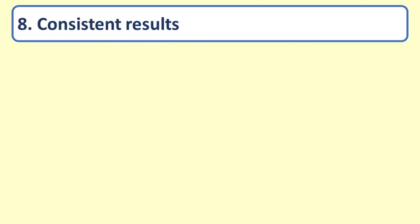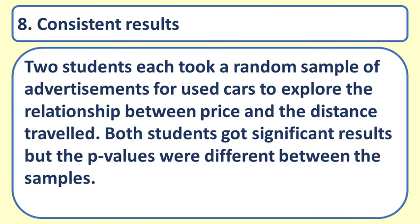Question 8. Consistent results. Two students each took a random sample of advertisements for used cars to explore the relationship between price and the distance travelled. Both students got significant results, but the p-values were different between the samples. This is to be expected.